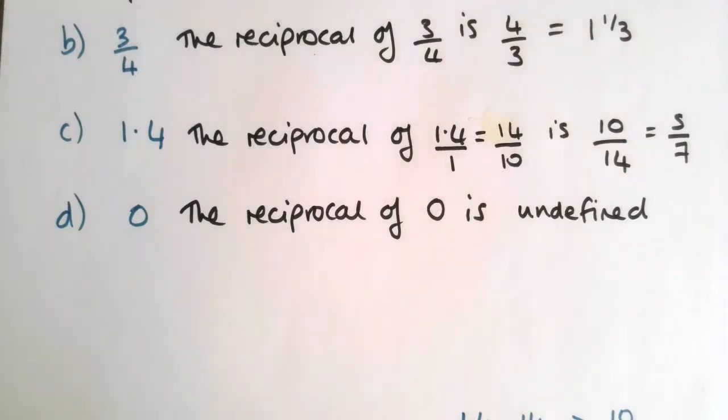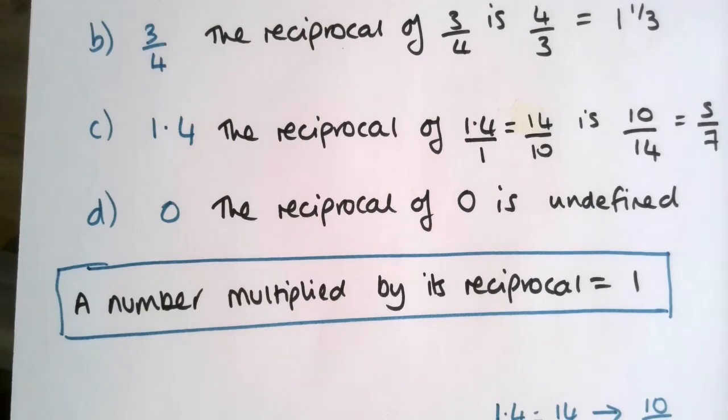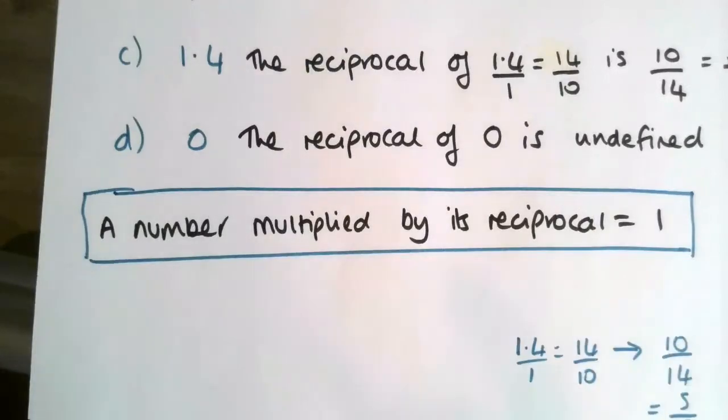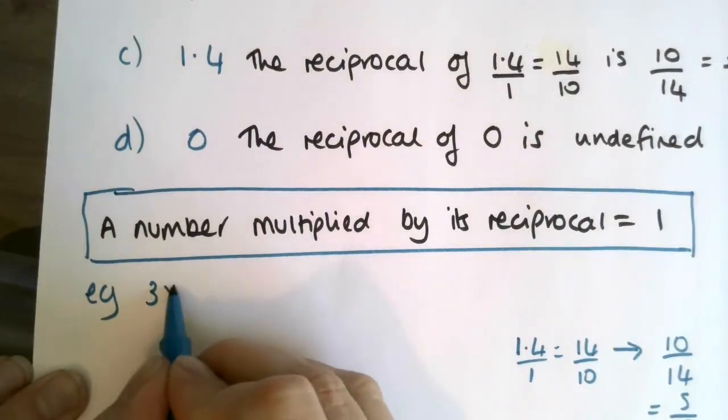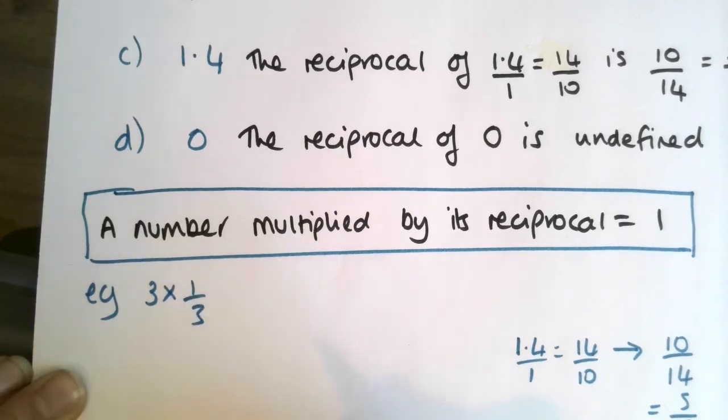Another little fact which I forgot to write down here is that if you multiply a number by its reciprocal, you will always end up with one. So any number multiplied by its reciprocal will always give you one. So for example, if we had three, three multiplied by its reciprocal, which would be a third, three times a third gives you one. That will always work out.